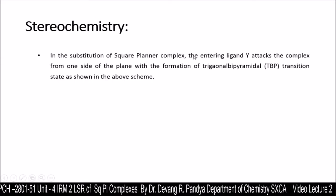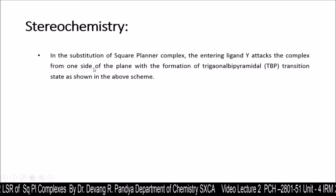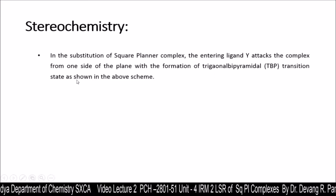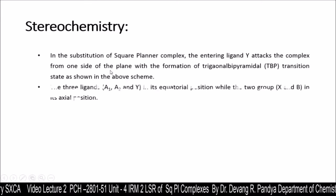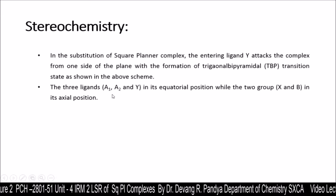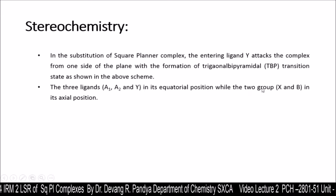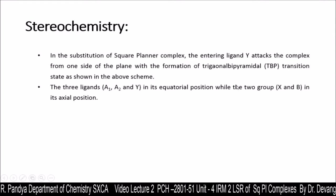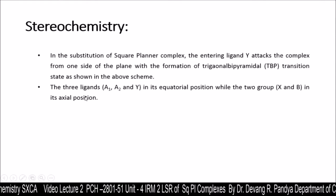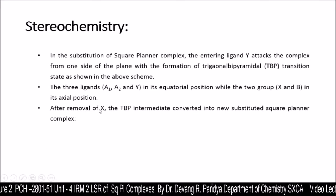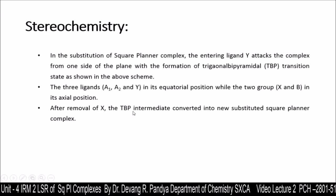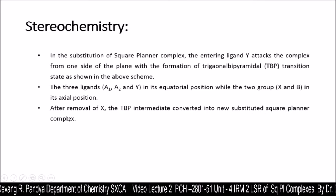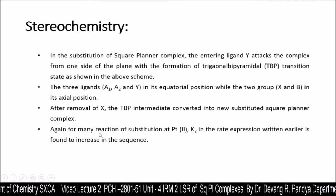In the substitution of a square planar complex, the entering ligand Y attacks from one side of the plane with formation of a trigonal bipyramidal (TBP) transition state. The three ligands a1, a2, and Y occupy the equatorial positions, while the two groups X (leaving group) and B (spectator ligand) occupy the axial positions. After removal of leaving group X, the TBP intermediate converts into the new substituted square planar complex, retaining the geometry.